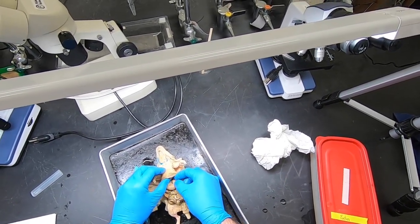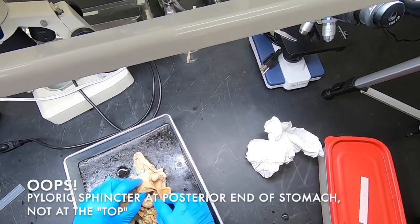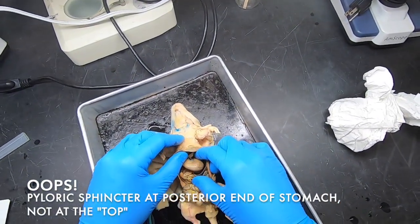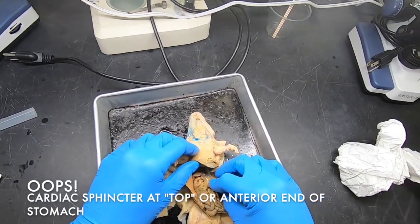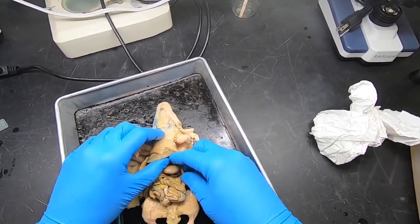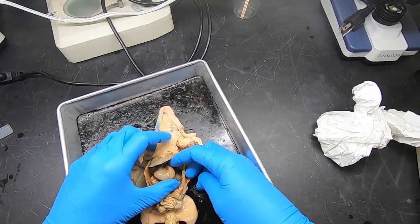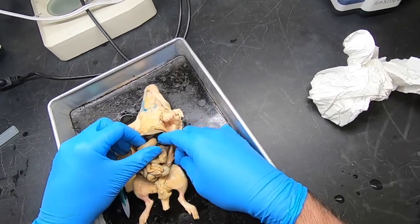We can find the pyloric sphincter at the top, and if we look down in there, we should be able to find the end of the esophagus which feeds into the stomach.